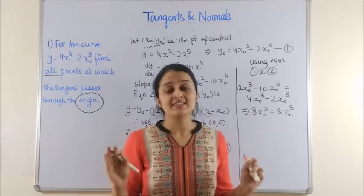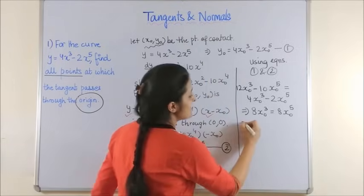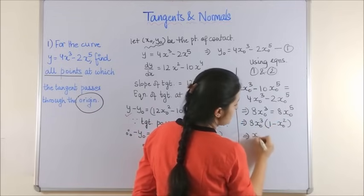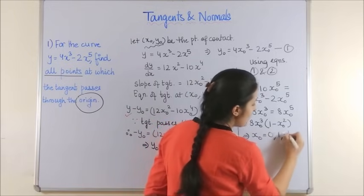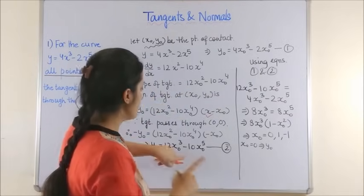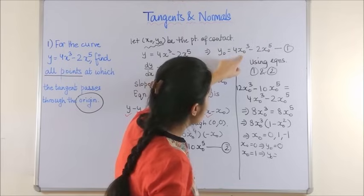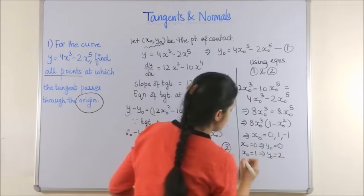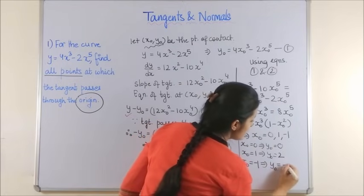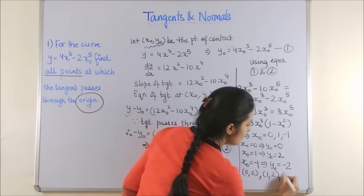Do not cancel x₀ from the equations since nowhere in the question is it stated that x₀ ≠ 0. Equating equations 1 and 2: 12x₀³ − 10x₀⁵ = 4x₀³ − 2x₀⁵. Bringing everything to one side and factoring out x₀³ gives x₀³(8 − 8x₀²) = 0, so x₀ = 0, 1, or −1. For x₀ = 0: y₀ = 0. For x₀ = 1: y₀ = 4 − 2 = 2. For x₀ = −1: y₀ = −4 + 2 = −2. The required points are (0, 0), (1, 2), and (−1, −2).